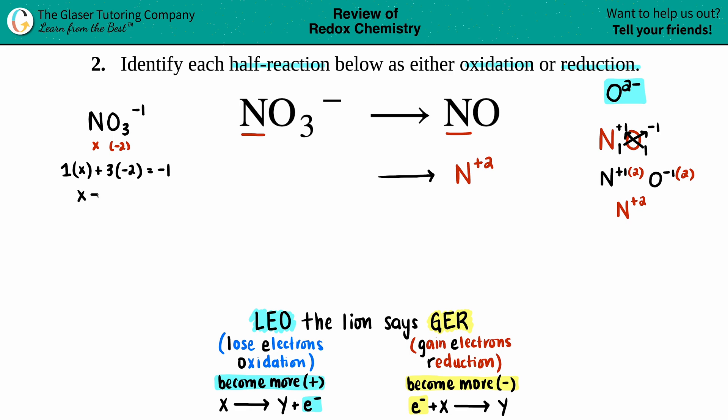X minus six equals a negative one, because three times a negative two is negative six. Throw the six on over and now you have your charge: X was a plus five, which means that the nitrogen is now a plus five.